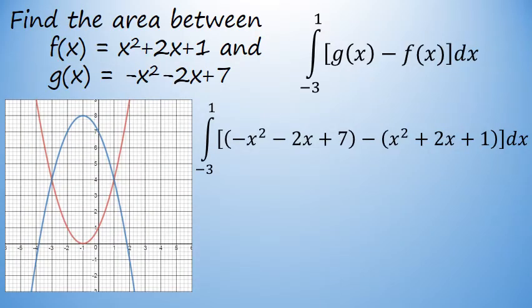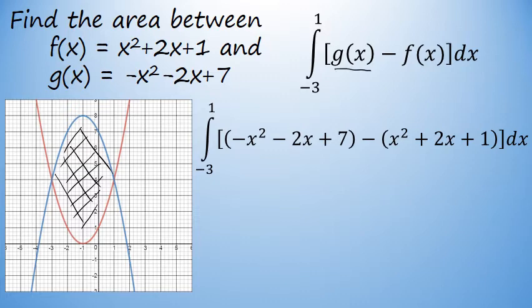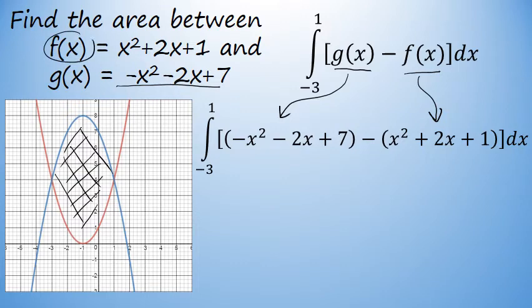Now that we know what the integral looks like, we'll perform the definite integration to find the exact area. The area equals the integral from negative 3 to 1 of g of x minus f of x, where g of x is negative x squared minus 2x plus 7, and f of x is x squared plus 2x plus 1.